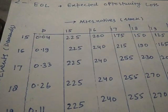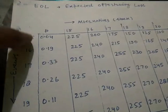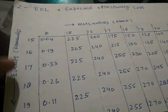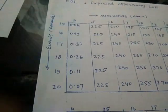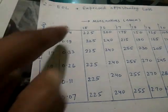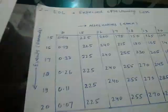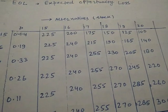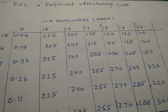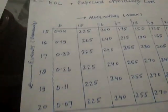The profit per newspaper is 15 paise. The anticipated demands are 15, 16, 17, 18, 19, and 20, and these are the probabilities of each demand. These are the anticipated stocks, which are the courses of action, and the demand values are the events.